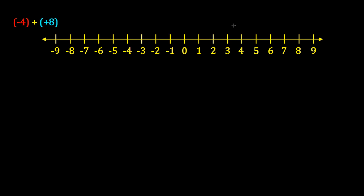Positive integers pointed to the right on the number line, negative integers pointed to the left. And when we were first putting an integer down on the number line, we'd put the tail at zero and the tip at its value on that number line.